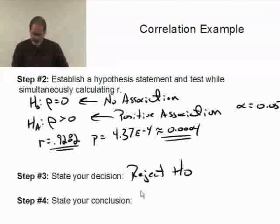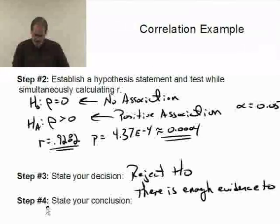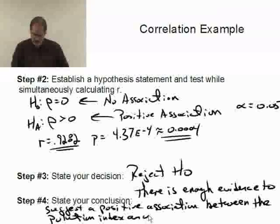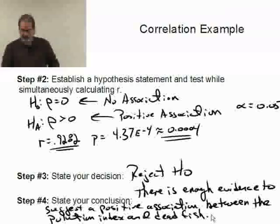And state my conclusion. In conclusion, there is enough evidence to suggest a positive association between the pollution index and the number of dead fish. So it definitely looks like there is an association there. Okay, that's really all there is to Pearson's correlation. That's really all we're going to be working with it.